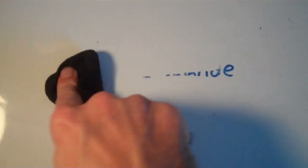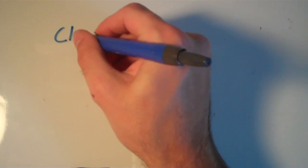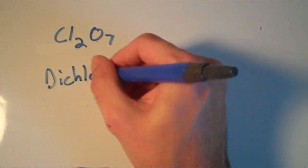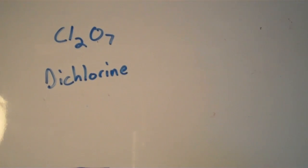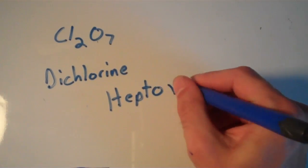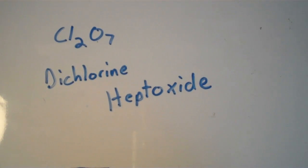So let's do another one. Cl2O7. We have chlorine and we have oxygen, and we have two chlorines, so that's going to be dichlorine. And then we have seven oxygen, so that means we use the prefix hepta for seven, so dichlorine heptoxide. And we usually drop the last vowel on the prefix when we have an element that begins with a vowel, so instead of heptaoxide, we just say heptoxide. It just kind of rolls off the tongue better.